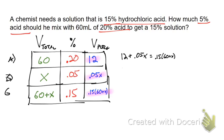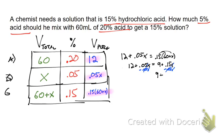Distributing: 0.15 times 60 is 9, and 0.15 times x is 0.15x, so we have 12 + 0.05x = 9 + 0.15x. Subtracting 0.05x from both sides gives 12 = 9 + 0.10x. Subtracting 9 from both sides gives 3 = 0.10x. Dividing by 0.10, we get x = 30.